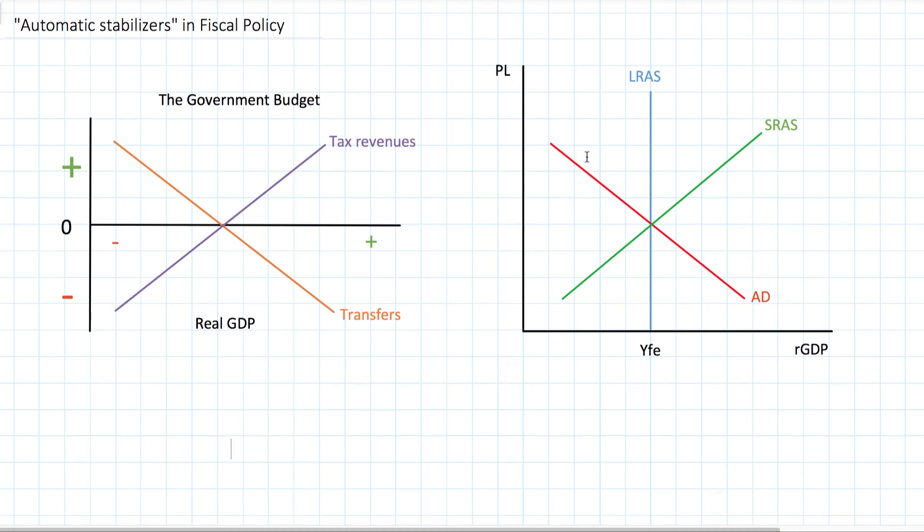In our last two videos, we've talked about expansionary fiscal policy and contractionary fiscal policy. One assumption I was making but didn't explicitly articulate in those videos was that in both those examples, the government was undertaking what was called discretionary fiscal policy.